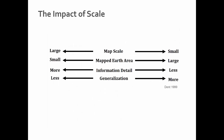There's an interesting chart that Borden-Dent created that sums up how generalization, scale, and the amount of area you're mapping all tie together. It's definitely worth memorizing. If you have a large map scale, you'll have a small mapped earth area, more information detail, and less generalization. If you have a small map scale, for example 1 to 2 million, you'll have a larger mapped area, less information detail, and more generalization will be required.